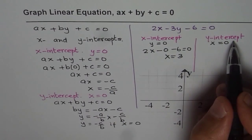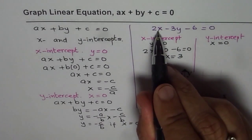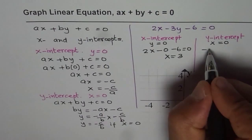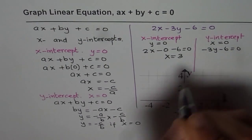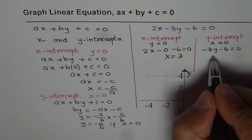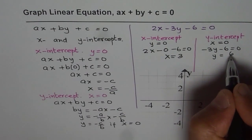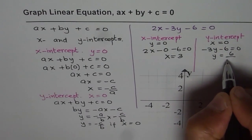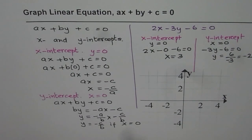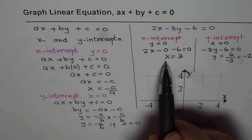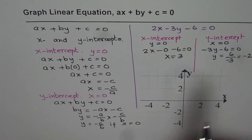Now let us find the Y intercept. For Y intercept, X is 0. In this equation, if X is 0, we are left with minus 3Y minus 6 equals to 0. Taking 6 to the other side divided by minus 3 gives us a value of minus 2. So we know the X intercept is 3 and the Y intercept is minus 2.